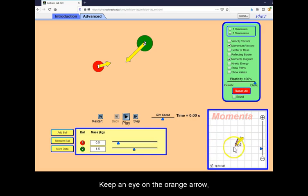Keep an eye on the orange arrow here in the corner, which is the vector sum of the two momenta vectors of these objects.